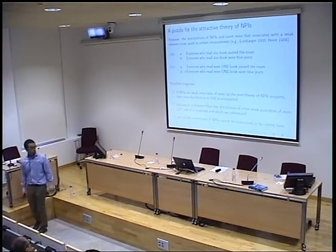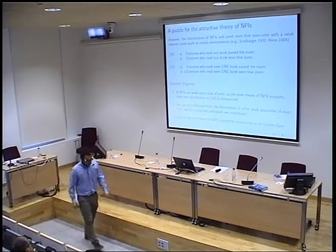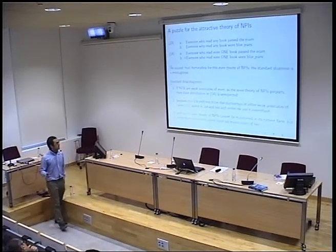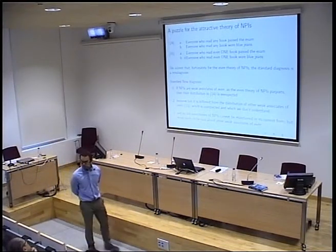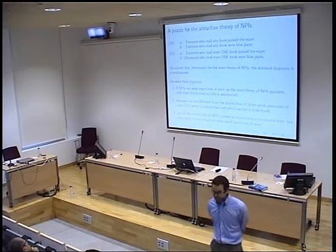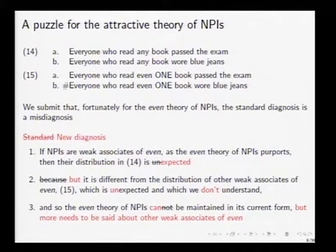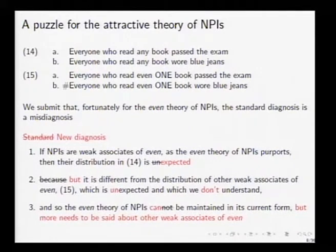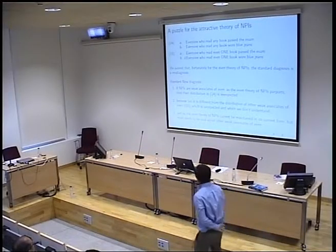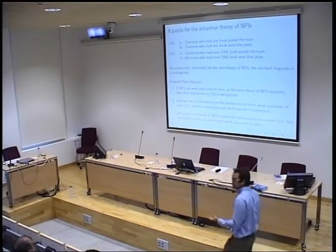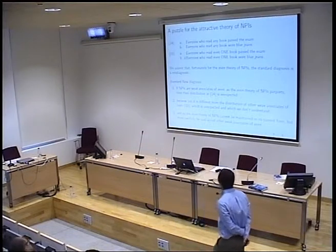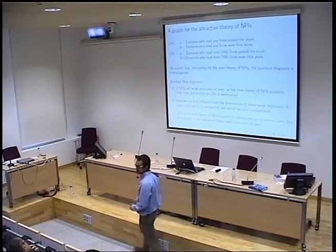This is the standard diagnosis that has been proposed, and usually people follow it. However, today we're actually going to argue that this is a misdiagnosis, and that a different diagnosis is the correct one: if NPIs are weak associates of 'even' as the even theory purports, then their distribution is in fact expected. But because it differs from the distribution of 'even one' expressions in sentence 15, we have to say that distribution is unexpected and we don't understand it. The consequence is that the even theory of NPIs can be maintained.